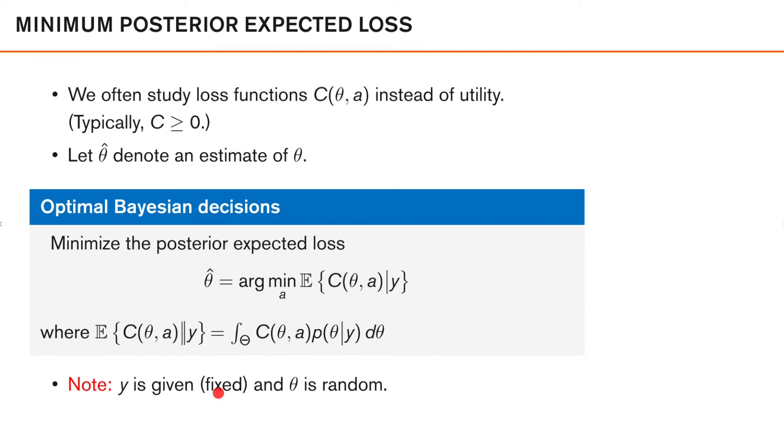We should note that we condition on y here. So y is given and fixed, but theta is random. We have uncertainty regarding theta. We should also note that in an estimation problem, theta is continuous, so the expectation can be calculated like this.